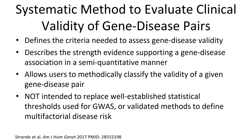This framework defines the criteria needed to assess clinical validity, quantifies the evidence supporting a gene disease association, and allows curators to use this information to methodically classify the validity of a given gene disease pair. This framework is currently optimized for genes associated with monogenic disorders. It is distinct from, and not meant to be suitable for, the well-established statistical thresholds used for genome-wide association studies or validated methods to define multifactorial disease risk. Future iterations will expand the framework to consider the evaluation of oligogenic or multifactorial conditions.